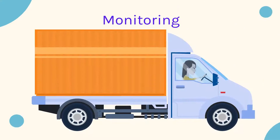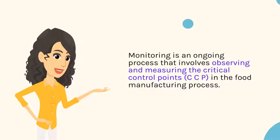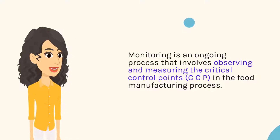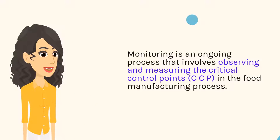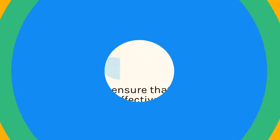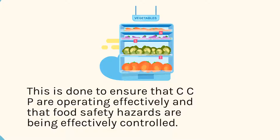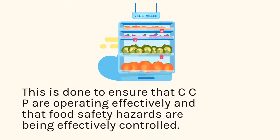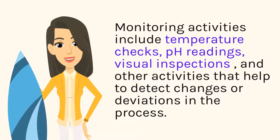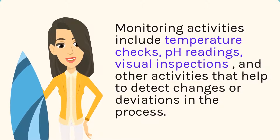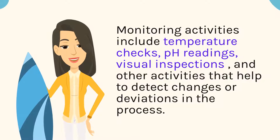Monitoring is an ongoing process that involves observing and measuring the critical control points in the food manufacturing process. This is done to ensure that CCPs are operating effectively and that food safety hazards are being effectively controlled. Monitoring activities include temperature checks, pH readings, visual inspections, and other activities that help to detect changes or deviations.